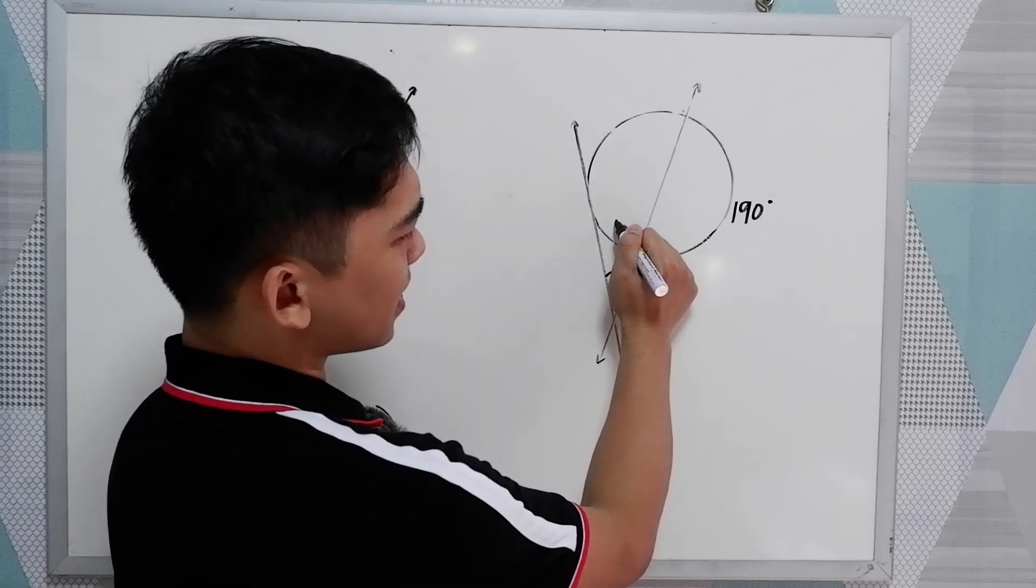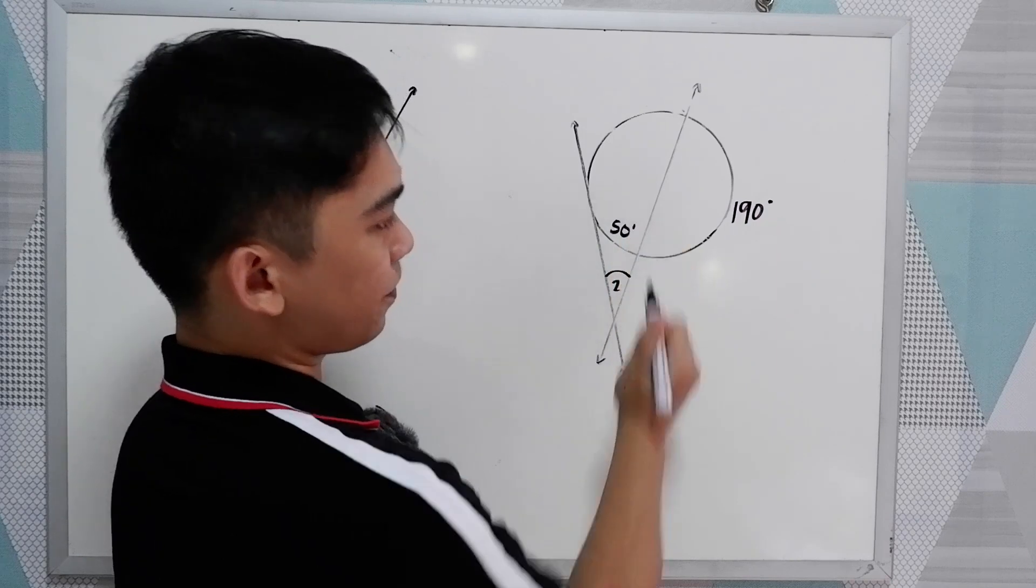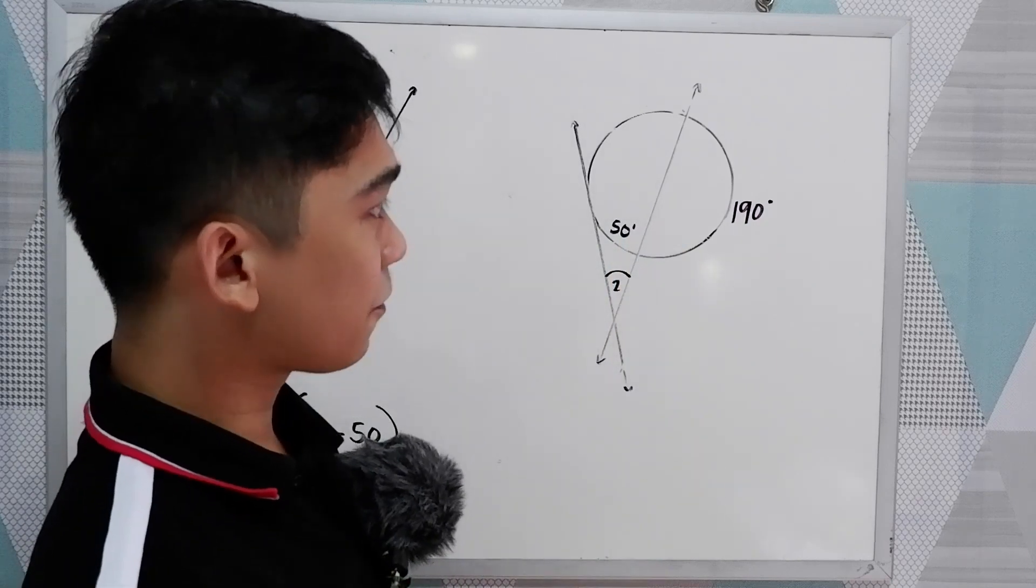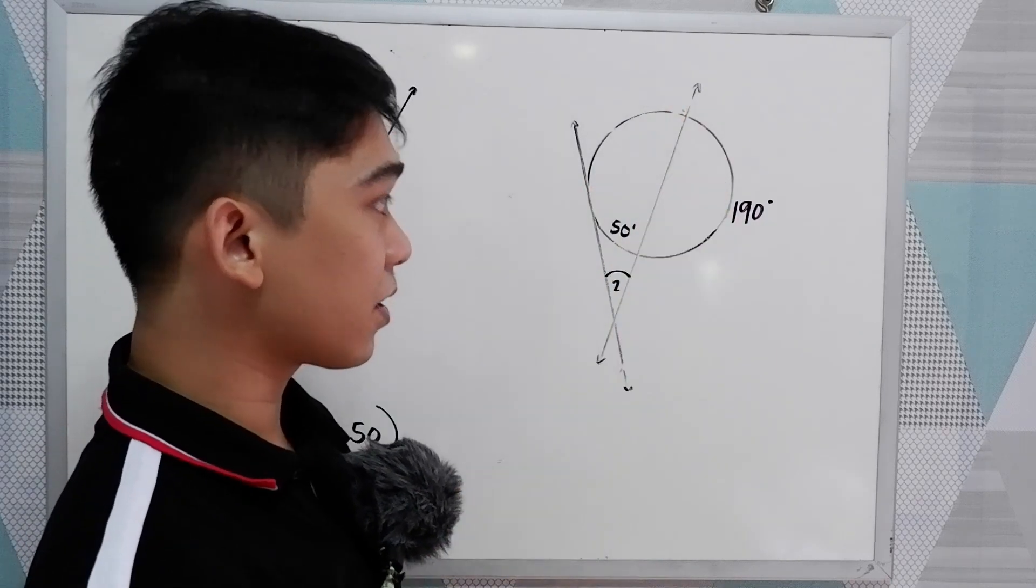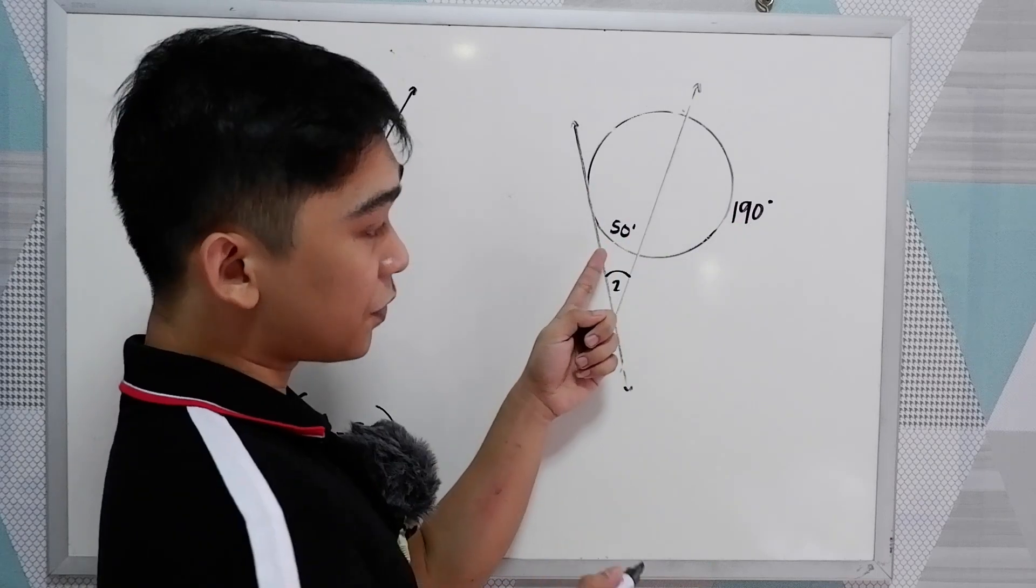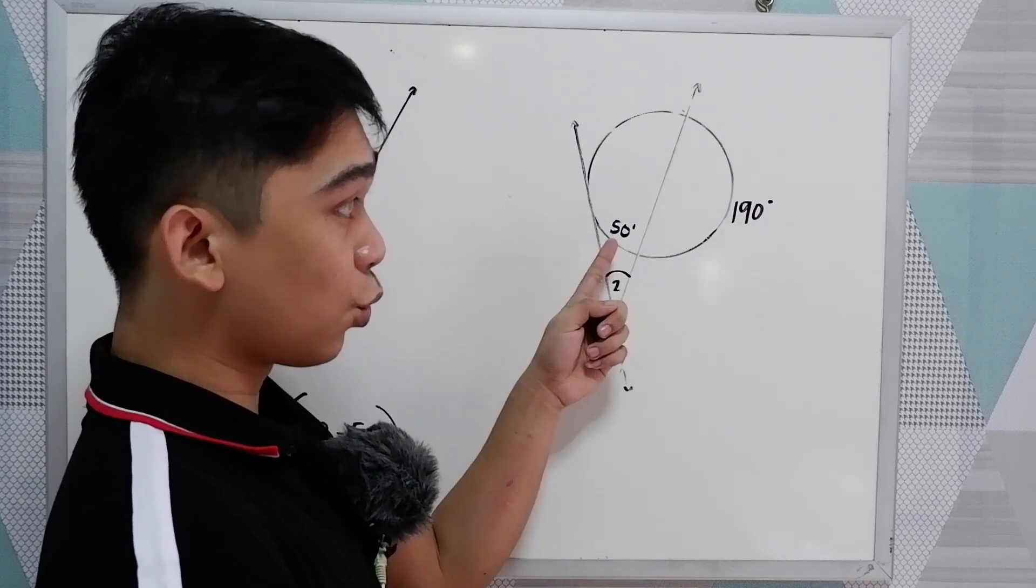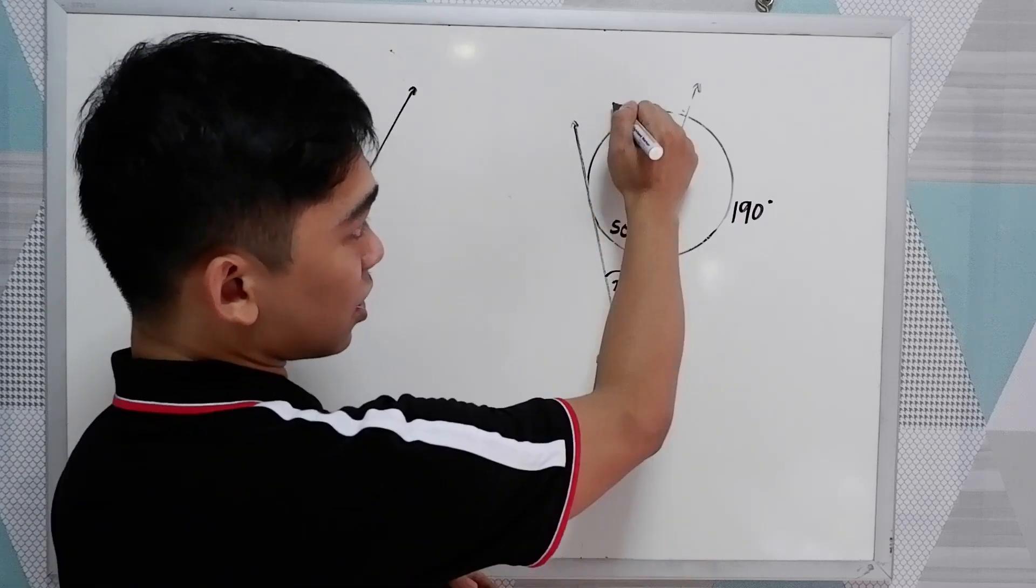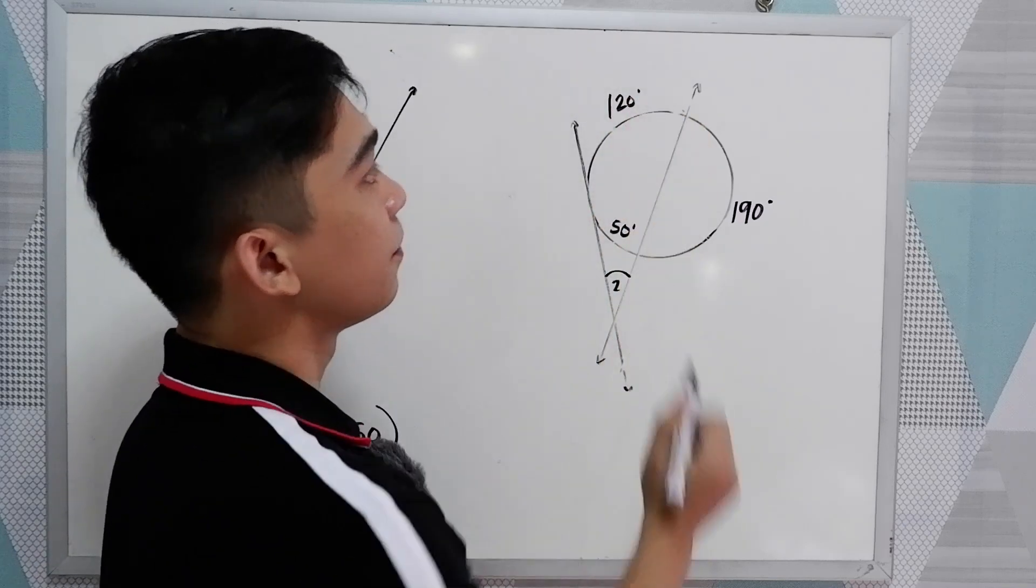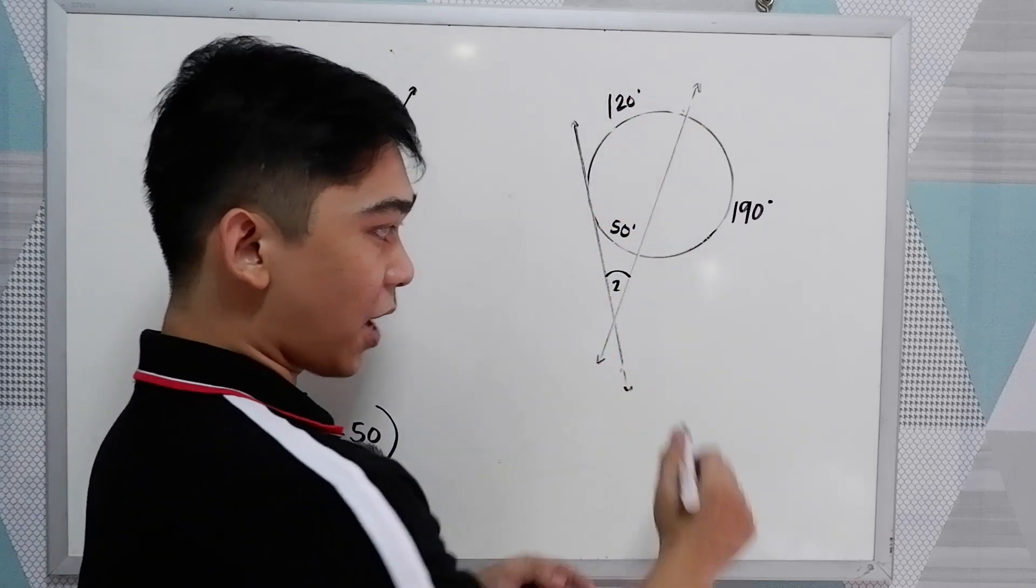So let's say this is 50 degrees. First, find the measure of the intercepted arcs. So we have 190 and 50. That will give us 240. So this is 120 degrees. We can now get the measure of angle 2.